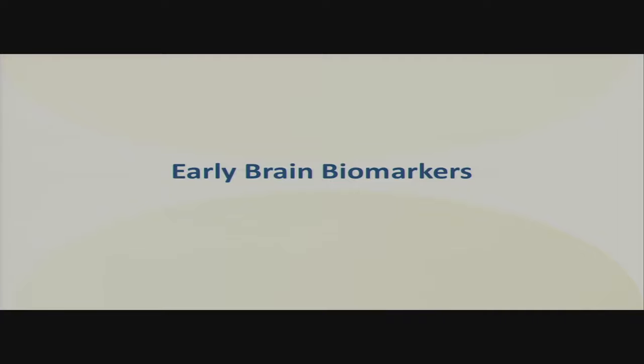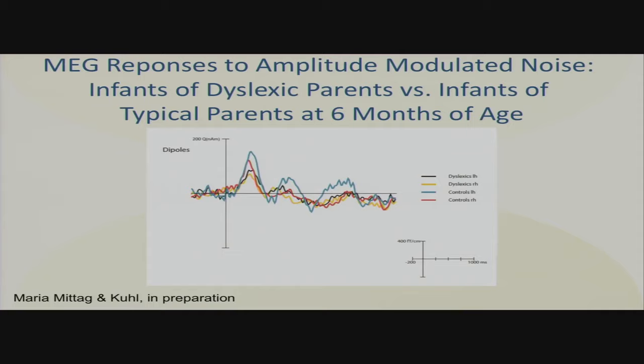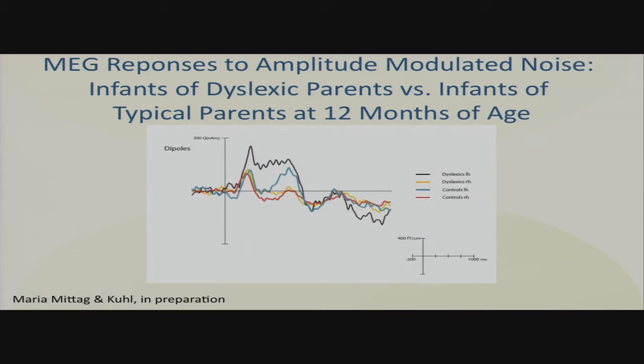We're looking at early brain markers for dyslexia and getting very exciting work done. This is Maria Mitag's work. She shows that in babies born to parents diagnosed with dyslexia, as opposed to babies born to parents who've never been diagnosed, there's a big change between 6 and 12 months. At 6 months, right and left hemispheres in response to modulated noise look identical. But at 12 months, the standout result is that in dyslexic-history babies, left hemisphere responses seem to respond on time but then perseverate — hold that neural response. Very classic of dyslexia is the inability to process rapidly changing visual or auditory information. This would be exactly what you would predict.